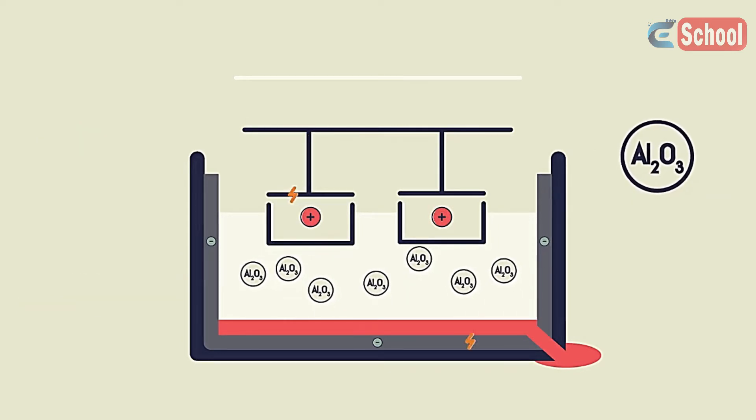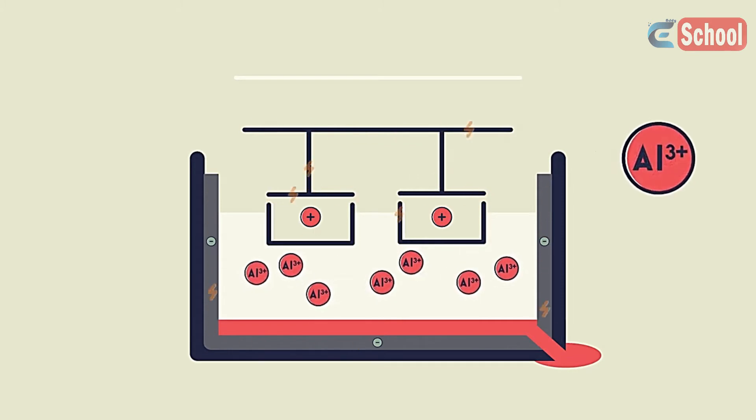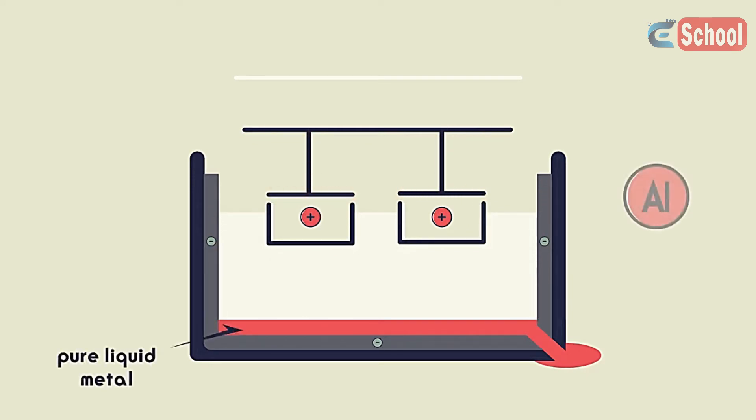When the battery is turned on and electricity flows, the aluminium from the aluminium oxide in the cryolite forms at the negative cathode and sinks to the bottom of the tank. Here it can then be tapped off as a pure liquid metal. The aluminium sinks because it is more dense than the aluminium cryolite solution.